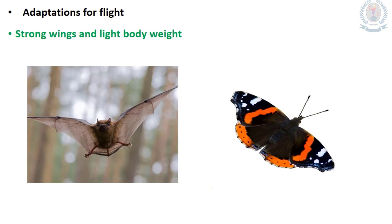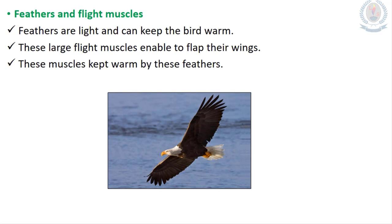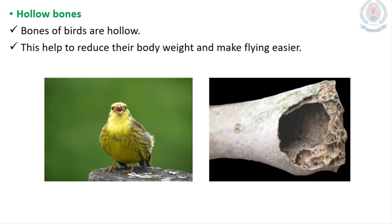Adaptations for flight are normally present in bats, birds and insects. Bats have very strong wings and butterflies have light body weight, which helps them to fly easily. Birds also have feathers and flight muscles — feathers are light and inside them there are muscles called flight muscles. These muscles help to warm up the feathers so the birds can fly easily.